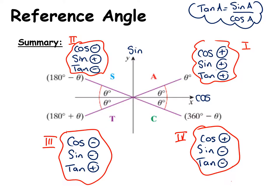This can be summarised using the CAST rule: C stands for cosine is positive (Q4), A for all are positive (Q1), S for sine is positive (Q2), T for tan is positive (Q3). Starting from the bottom right and working anti-clockwise — CAST — is the easiest way to remember it, and it can all be worked out from page 13 if you get stuck in the exam.